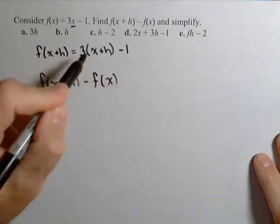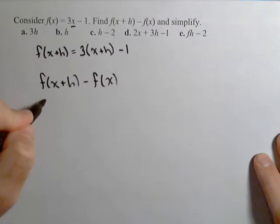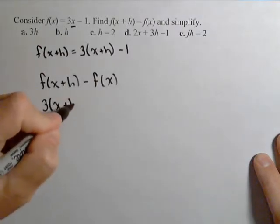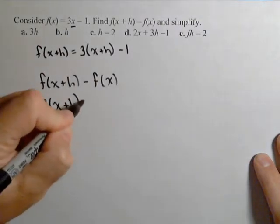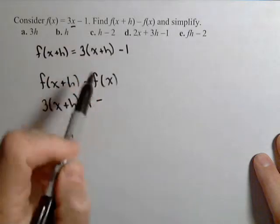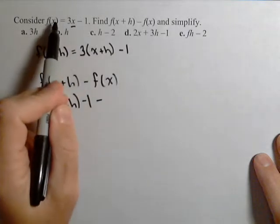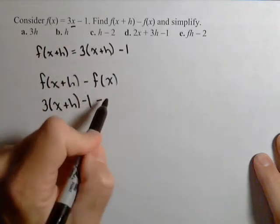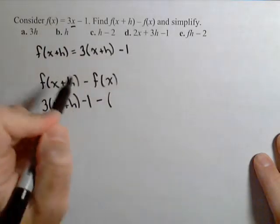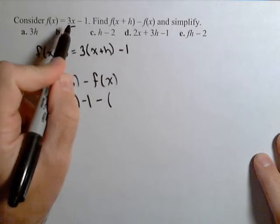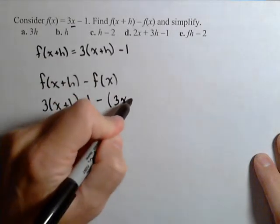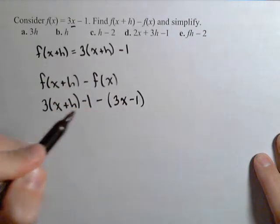I'm going to put in f of x plus h, which we just talked about right there, so 3 times x plus h minus 1, minus — now f of x is just the original function. But because of the minus, it's a really good idea to put that f of x in parentheses, so 3x minus 1.